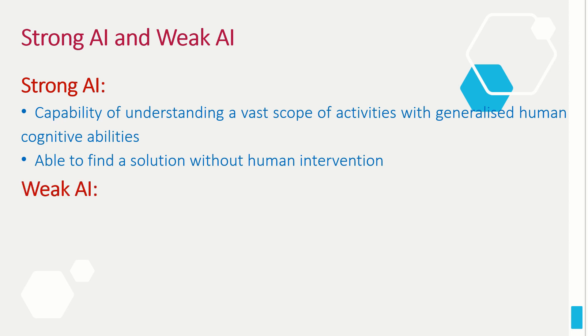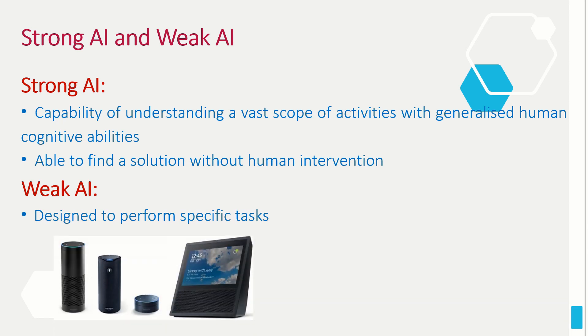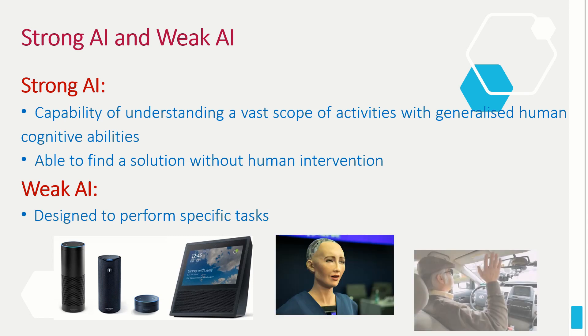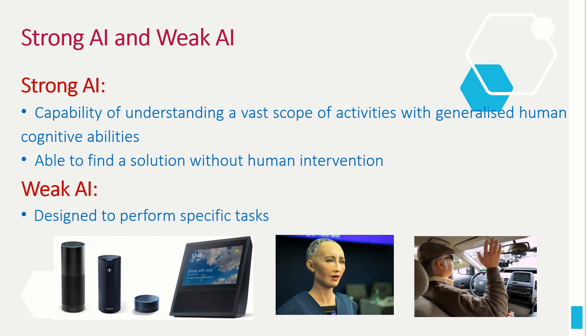Weak AI, which is also called narrow AI, refers to machines that are designed to perform specific tasks. For example, the smart speaker Alexa, Sophia the robot, and self-driving cars are all examples of weak AI.